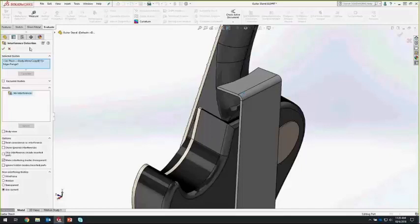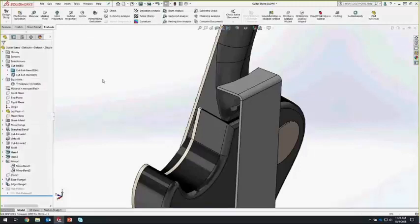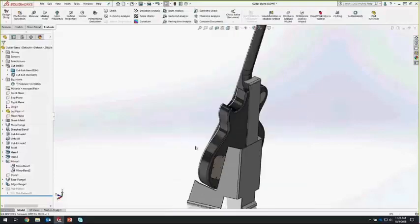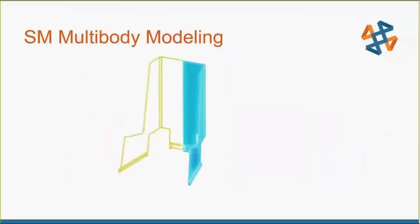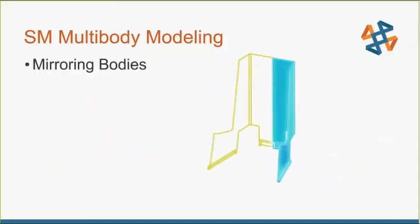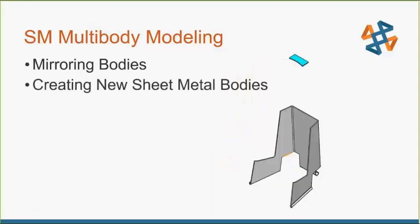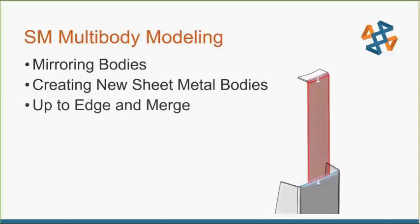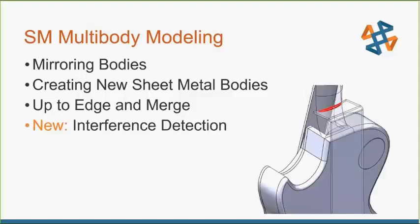Interference detection in part mode is also great for weldments — now you don't have to put a weldment into an assembly to check members. That's a great new enhancement for SOLIDWORKS 2019. In our sheet metal multi-body modeling section, we covered: mirroring sheet metal bodies (new in SOLIDWORKS 2013); creating new sheet metal bodies by adding another base flange; joining sheet metal bodies using the 'Up to Edge and Merge' end condition in edge flange; and the new interference detection in part mode feature, new for SOLIDWORKS 2019.